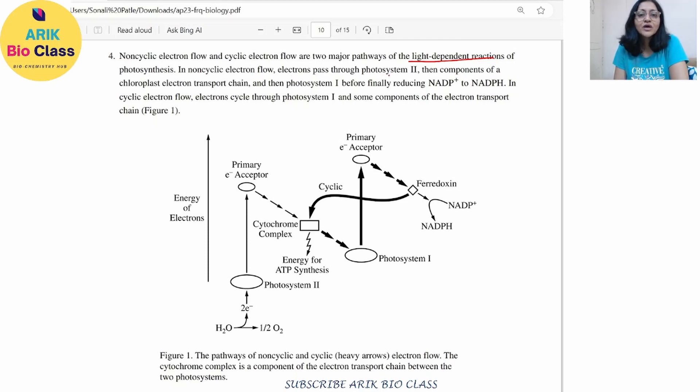electrons pass through photosystem II and then the components of electron transport chain and the photosystem I before finally reducing NADP+ to NADPH. In cyclic electron flow, the electrons cycle through the photosystem I and some components of the electron transport chain.